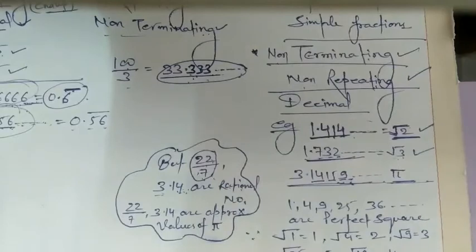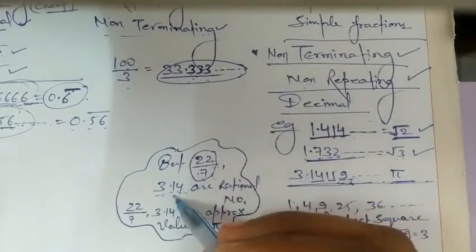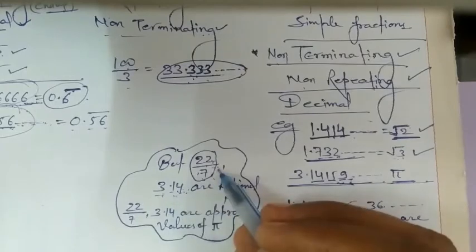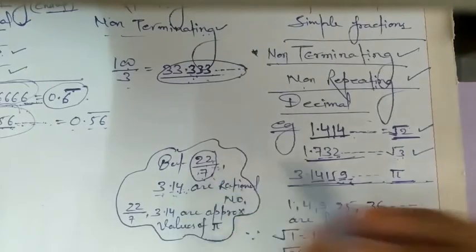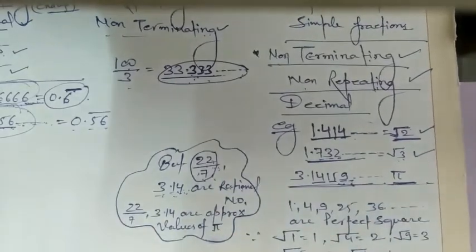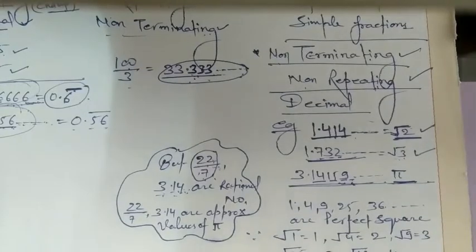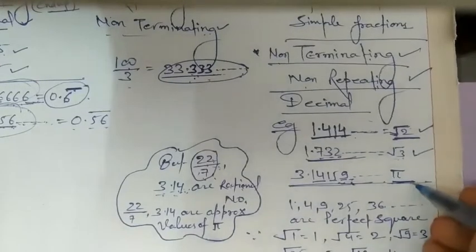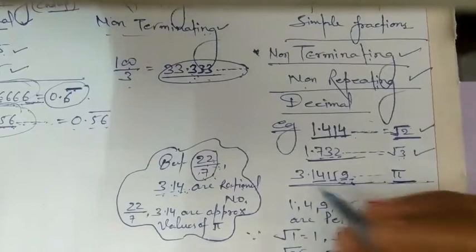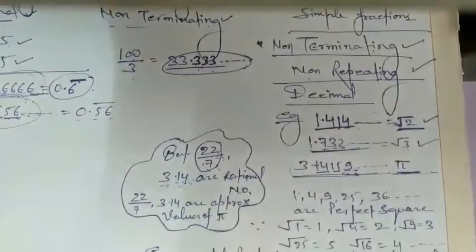Sometimes a question may ask whether a value is rational or irrational. The exact value of pi is irrational. But the approximate values 22 upon 7 and 3.14 are rational numbers. So if a question asks what pi is, the answer is irrational. But these approximate values are rational numbers.